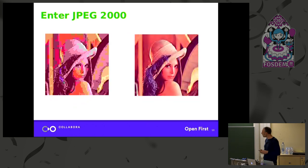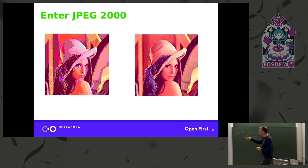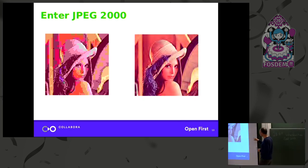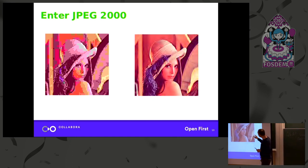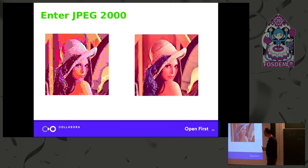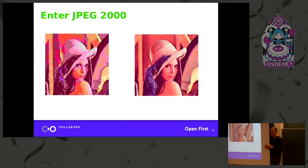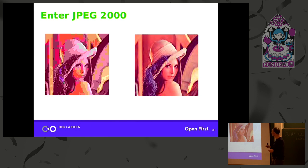Besides better compression, look at the artifacts between the two images. It's a one-bit-per-sample image of the Lena image. On the right is JPEG 2000. Because JPEG 2000 uses a wavelet transform versus an 8x8 transform for JPEG, when you lose data you just blur the image — you don't get those pixelated block artifacts. That was a big advantage for the new standard.